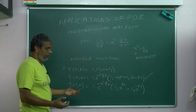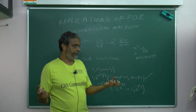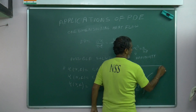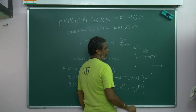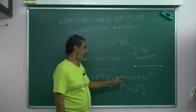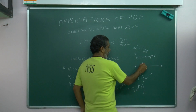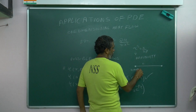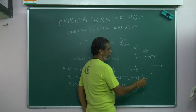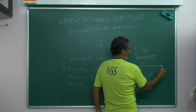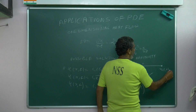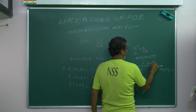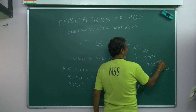Consider one thin rod. At both ends, you can keep ice balls. Taking the length as L, the boundary conditions are: u(0, t) = 0 — at x = 0 there is no heat flow — and u(L, t) = 0 — the end of the rod also has no temperature. Initially, some temperature f(x) will be given. So three conditions are required — same story as before.